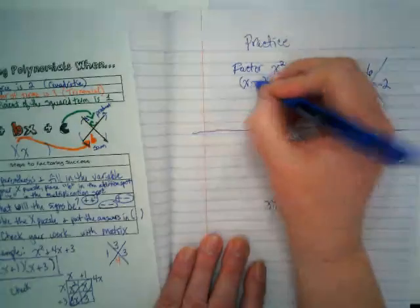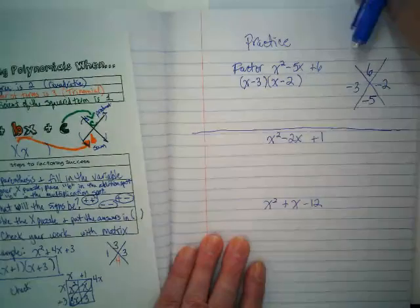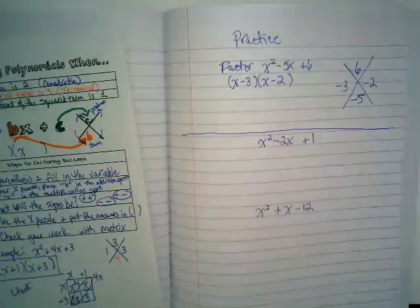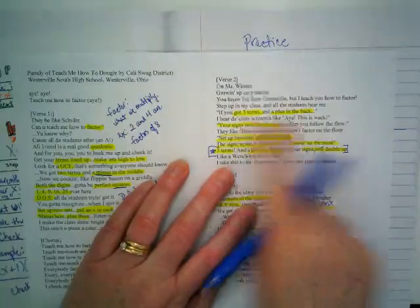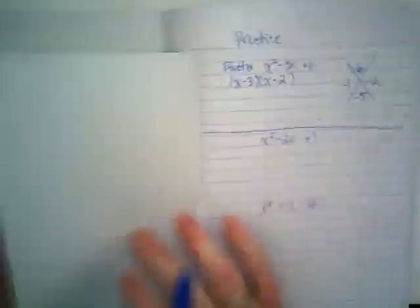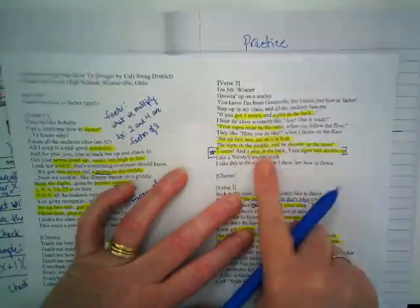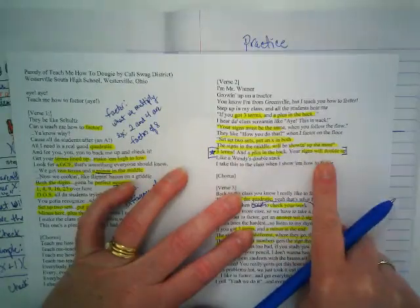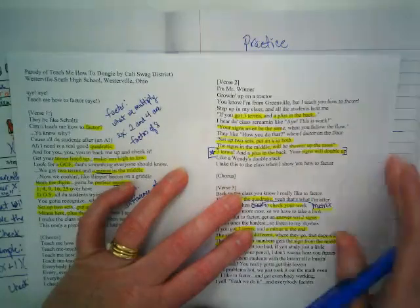Next step is to go back to my parentheses and put in what I found from solving my X puzzle. I want to point you guys back to the lyrics here. We have three terms with a plus in the back. What they mean by that, there's a plus back here. Remember I said three terms plus in the back, the signs will... Did we get both of them as a negative? Okay, and now we're going to check it.